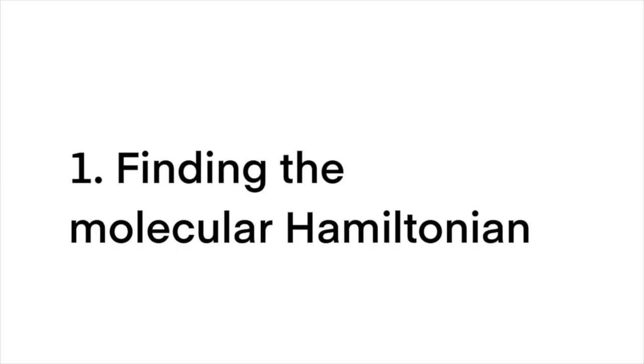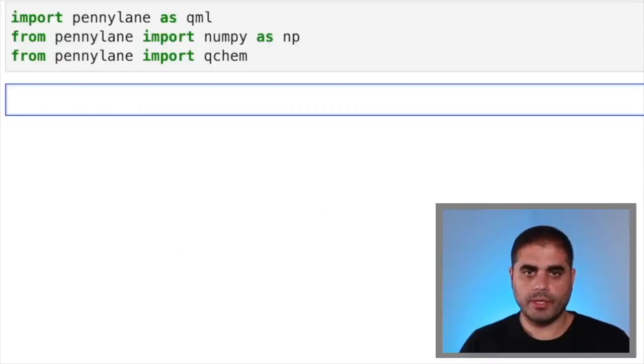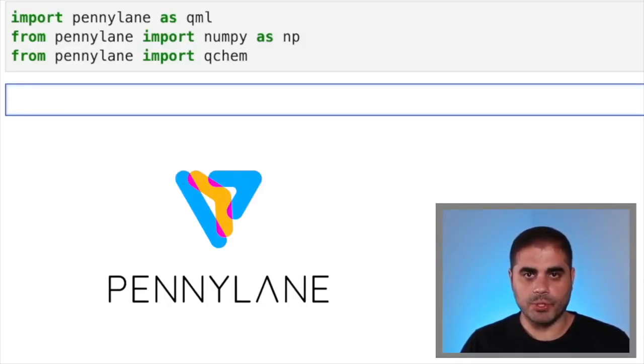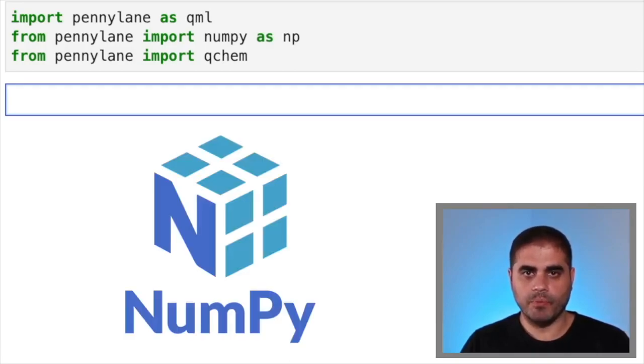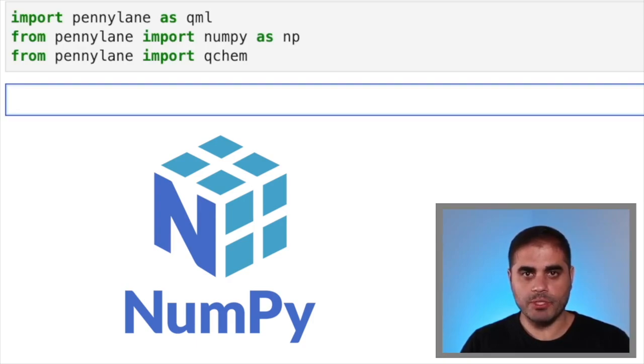Step one, finding the molecular Hamiltonian. So to start with, we're going to import the usual libraries. We import PennyLane as qml, as usual, and then from PennyLane, we import NumPy as np. We're going to be doing a quantum chemistry example, so we will need the quantum chemistry library. So from PennyLane, we import qchem.